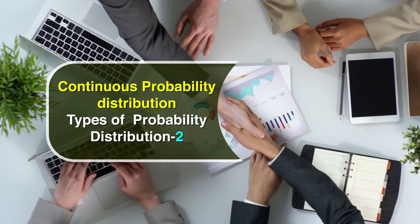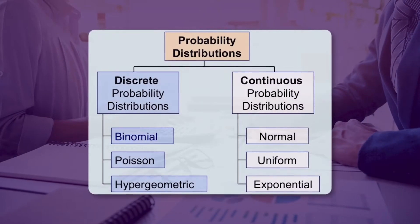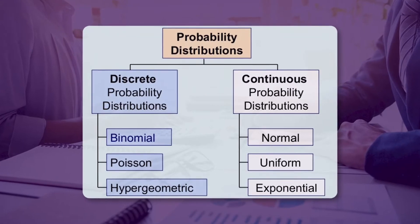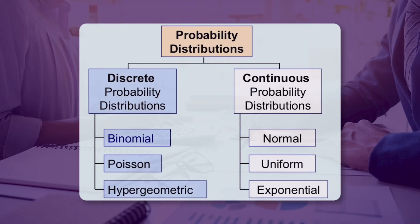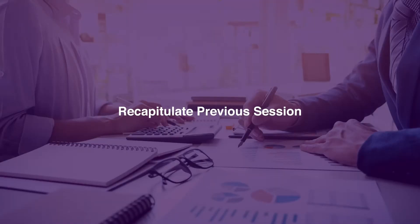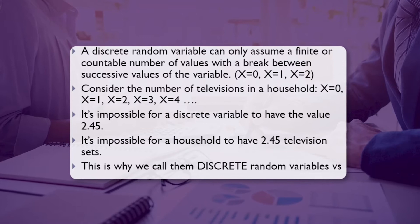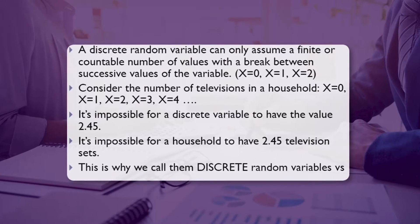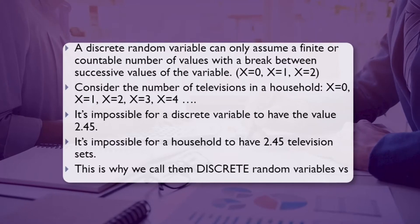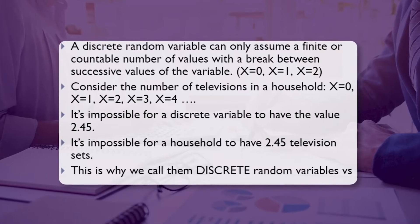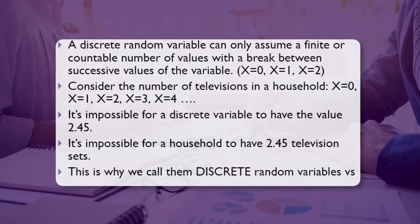In the backdrop, discrete probability distribution was focusing more on binomial, Poisson, and hypergeometric, whereas continuous probability distribution is more emphasized on normal, uniform, and exponential. Both types are quite important — discrete random variable can assume a finite, countable number of values with a break between successive values, where x equals 0, 1, 2, 3, 4, and so forth.